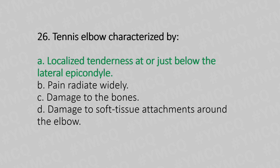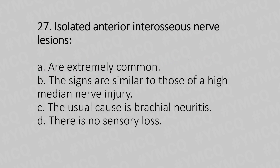Now let's move to question number 27. Isolated anterior interosseous nerve lesion. Option A, are extremely common. Option B, the signs are similar to those of high median nerve injury. Option C, usually caused by brachial neuritis. Option D, there is no sensory loss. And the answer is Option D, there is no sensory loss.